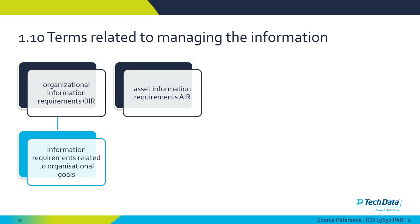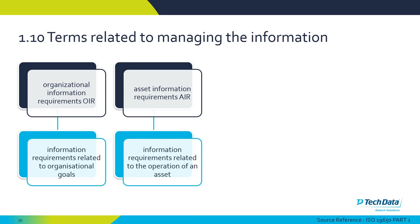An AIR, or Asset Information Requirements, relates to a specific piece of equipment — a unit, piece of furniture, light fitting, or air handling unit — that needs to be maintained within a project, such as windows or doors. These are related to the operation of an asset: when do all the windows need to get replaced, or when do the filters need to get changed in the air handling units?